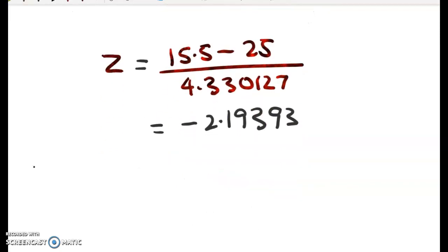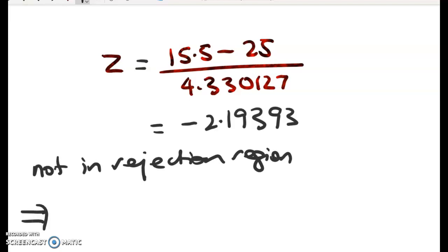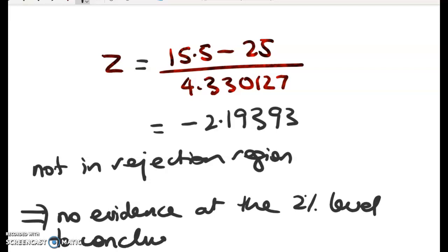So it's not in the rejection region. Not in rejection region. So that means we've got no evidence at the 2% level to conclude the ball is biased, or the slots are biased.